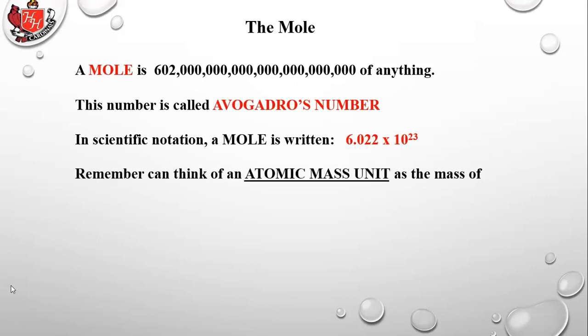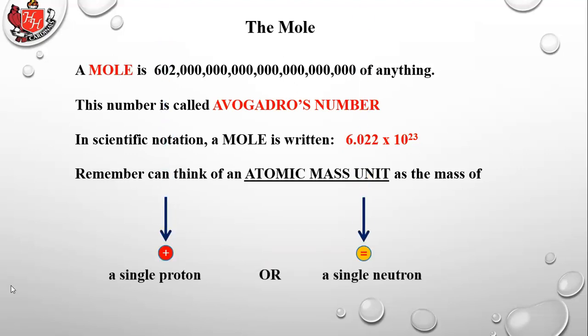You can think of an atomic mass unit (amu) as the mass of a single proton or a single neutron. We won't get into the detail that a neutron is slightly heavier — each of them is essentially one atomic mass unit.